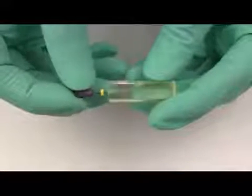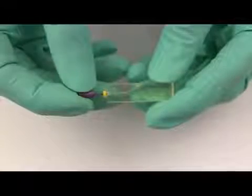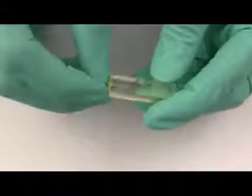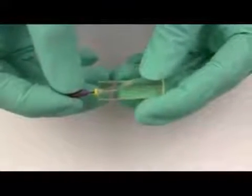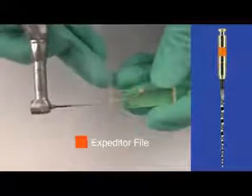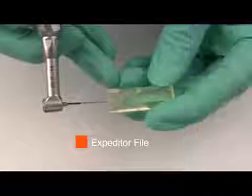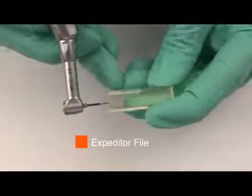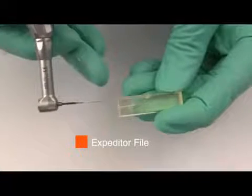As with all rotary file systems, you should first establish patency with a small hand file. Then you take the expediter file into the canal and based on where it loads with debris, that tells you whether you have a small, medium, or large procedure pack. In this case, we have a medium procedure pack because two-thirds of the cutting flutes were loaded with debris.